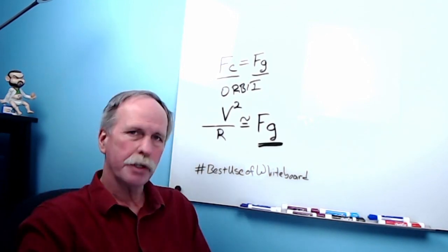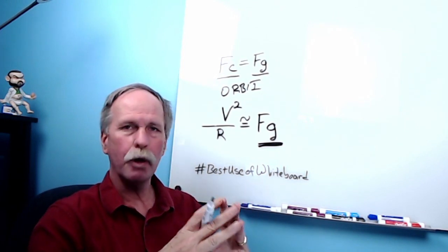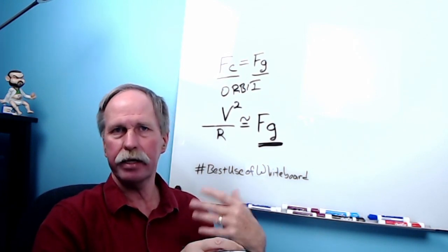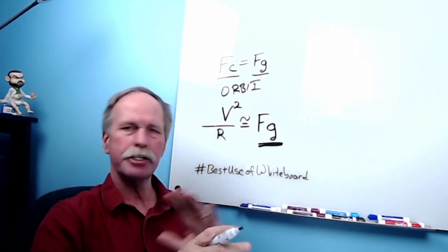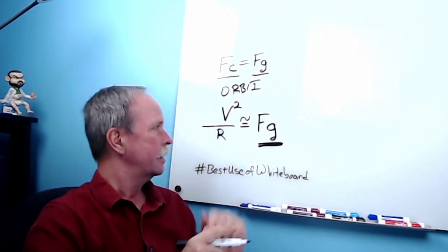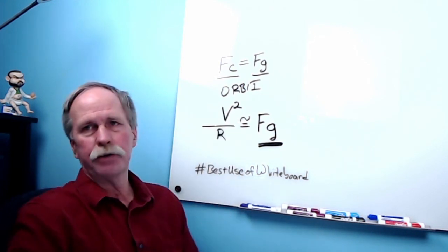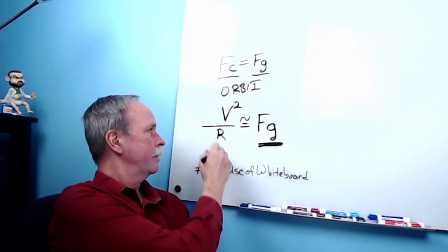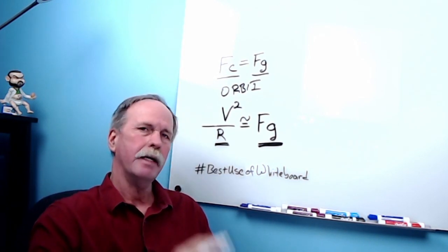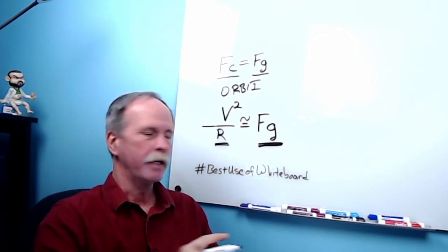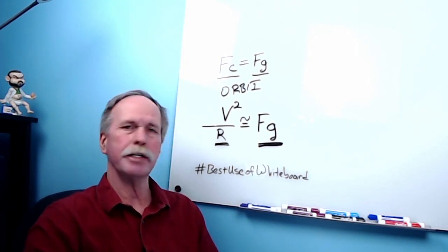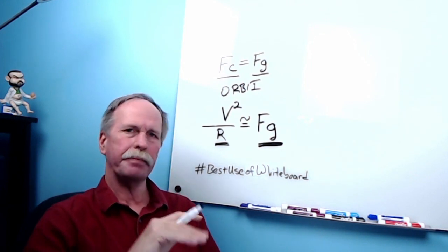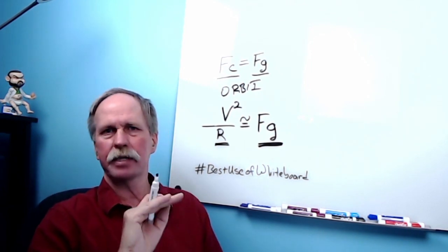The force of gravity acting on an object in orbit is pretty much a constant unless you really change the orbit significantly — we'll go into that when we cover Kepler's laws. But for now, let's just say the force of gravity is pretty much a constant. What happens if you increase the velocity of the satellite? In order for that to remain equal to the force of gravity, you have to increase the radius. Likewise, if you decrease the velocity of the satellite, you have to decrease the radius — and that's the radius from the satellite to the center of the earth, not the height of the satellite. This is not exactly accurate, but it's close enough to demonstrate the principle.